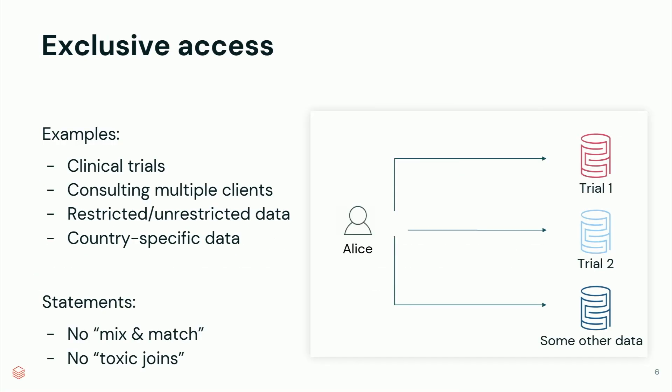So what is exclusive access? We talk to many customers and there are examples across many different industries that have very similar characteristics. For example, in the healthcare industry, a lot of our customers work with clinical trials. A data scientist like Alice is working on different trials — trial one and trial two. She has access to some data, but she shouldn't be mixing and matching trial data for various reasons.